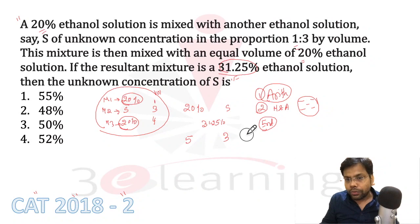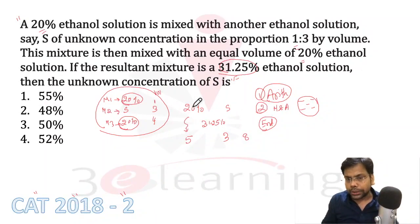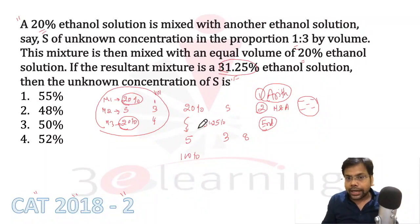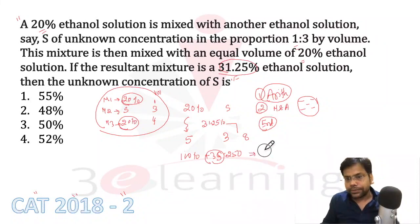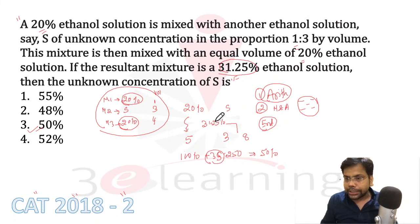And we finally want a result of 32.5%. The entire volume is 8 litres. In mixture alligation, if something is unknown, we use the star method: multiply this — which is 50%. You can solve the star by multiplying: multiply this one, multiply this one, and add. Multiplying gives 3S, and multiplying the other side gives 250. So the answer for S is nothing but 50%.